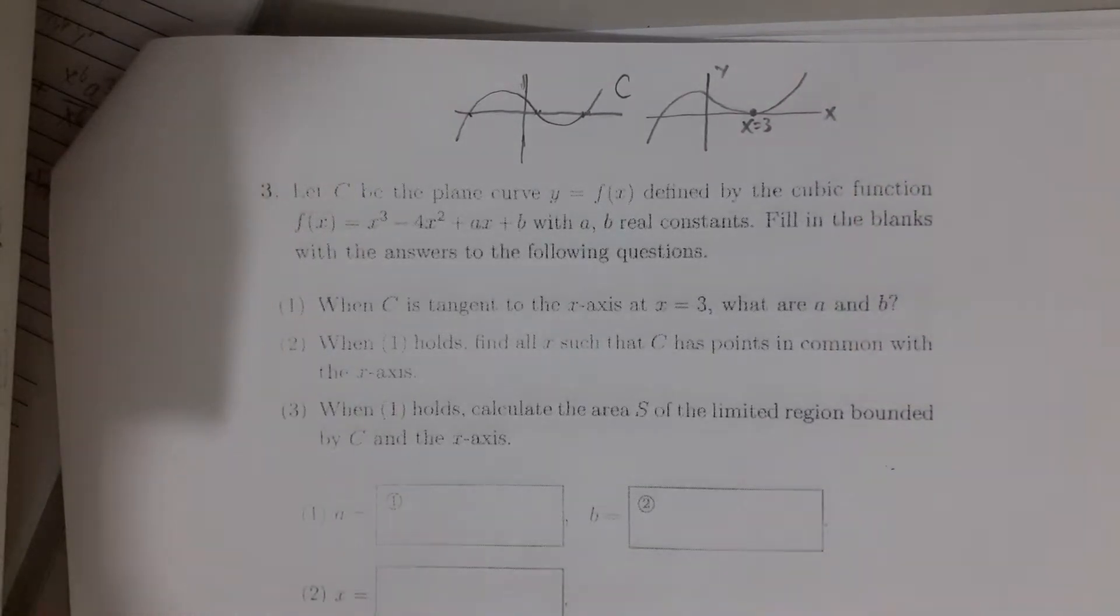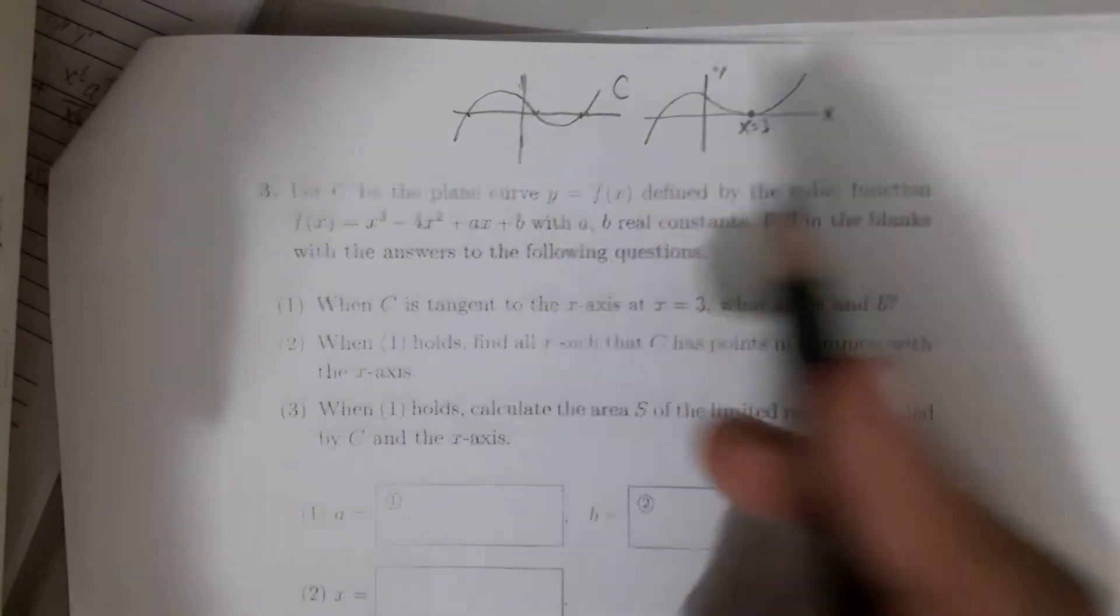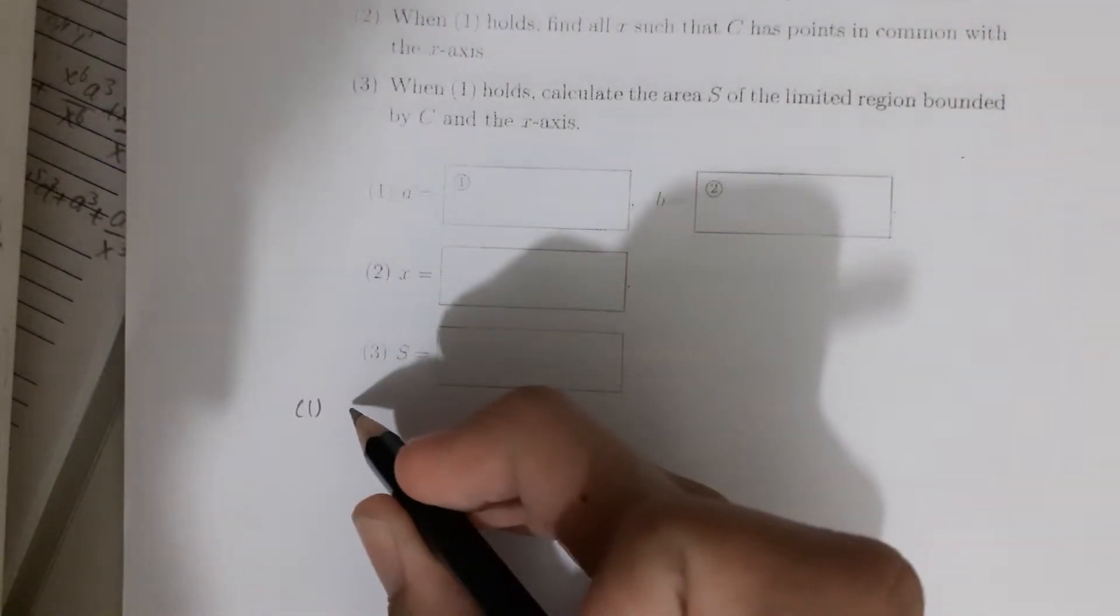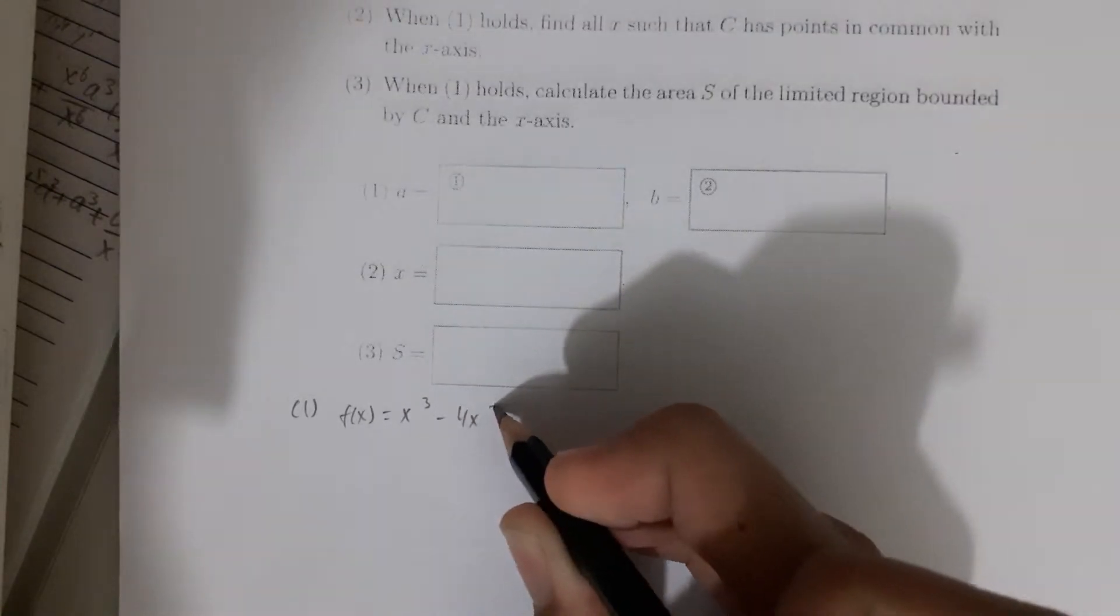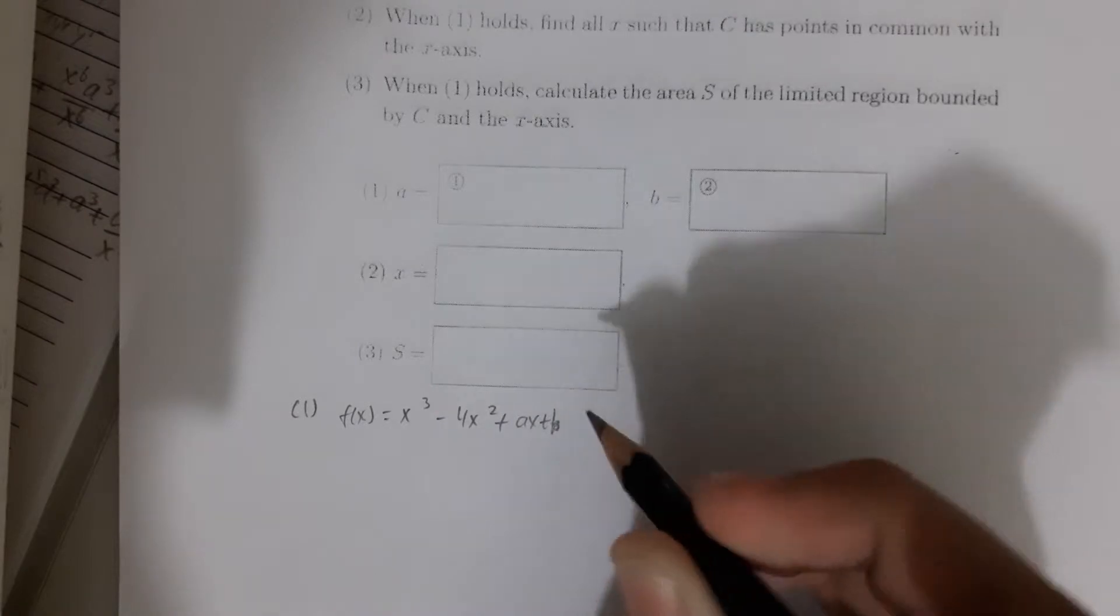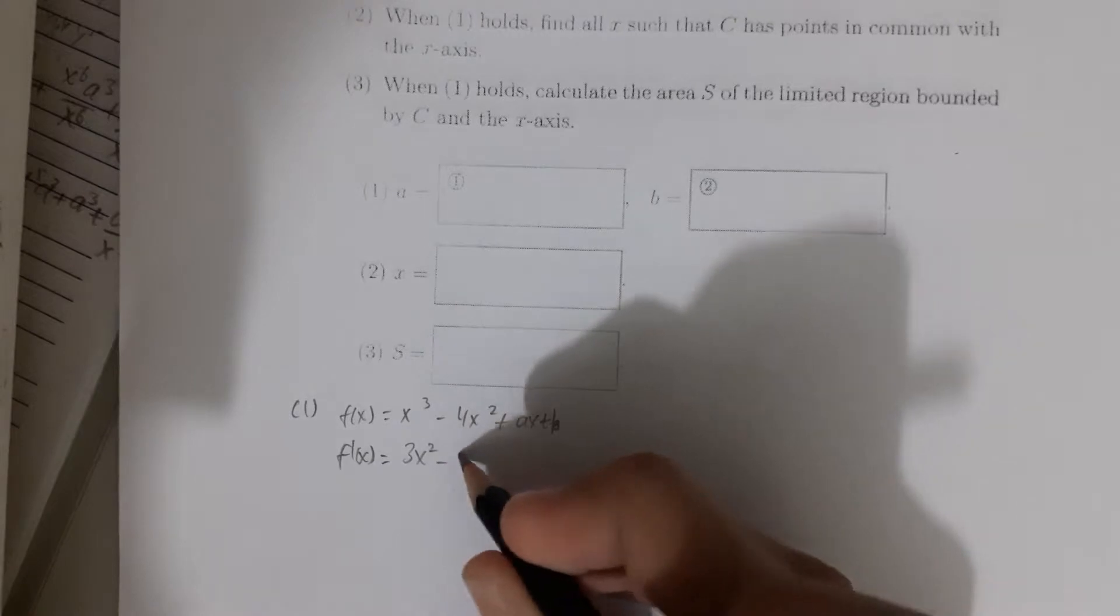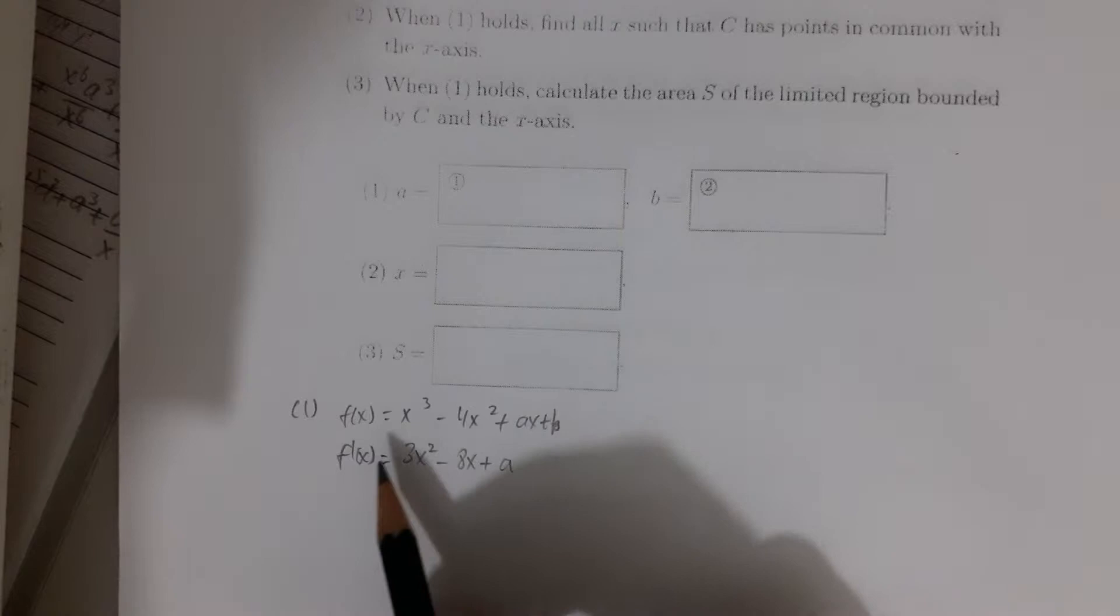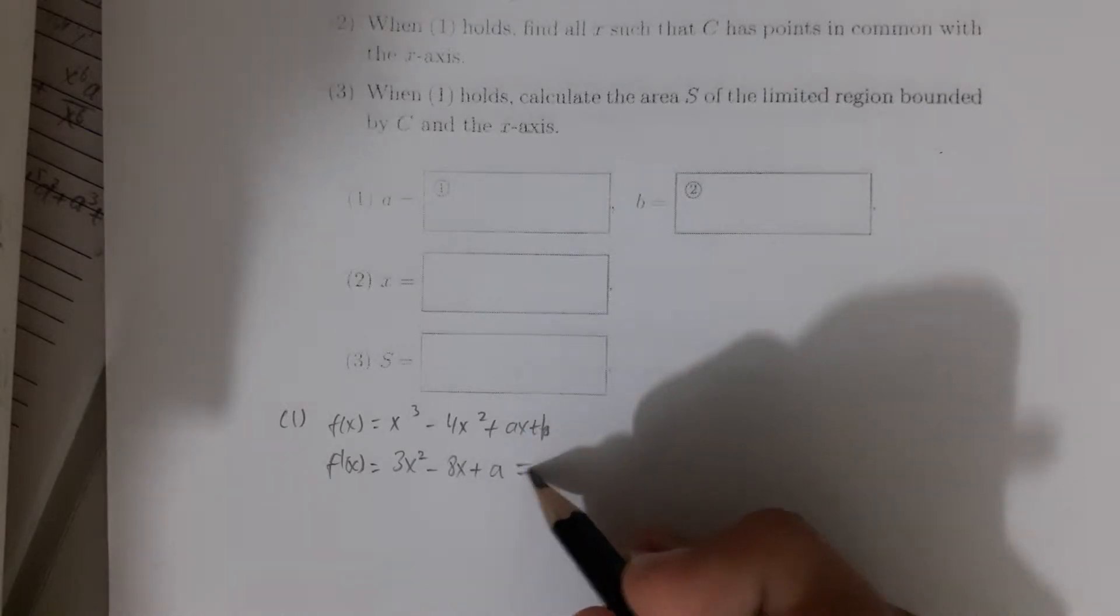The way to do that is to actually differentiate this function. So f(x) is equal to x³ minus 4x² plus ax plus b and just differentiate it. To differentiate, it would be 3x² minus 8x plus a. And remember, if you want to find a tangent, supposedly that we differentiate it means we are trying to find a gradient, but we just equal it with 0.